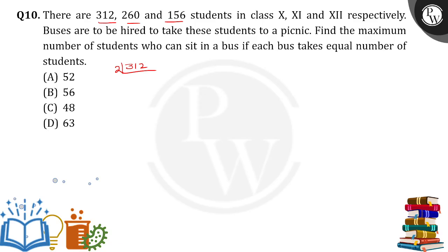So 2 table cancels 312 for how many times? 156 times. Again, 2 table cancels for how many times? 78 times. Again, 2 table cancels 78 for 39 times. Again, 3 table, 3 cancels 39 for 13 times. So 312 can be written as 2, 2, 2 into 3 into 13.